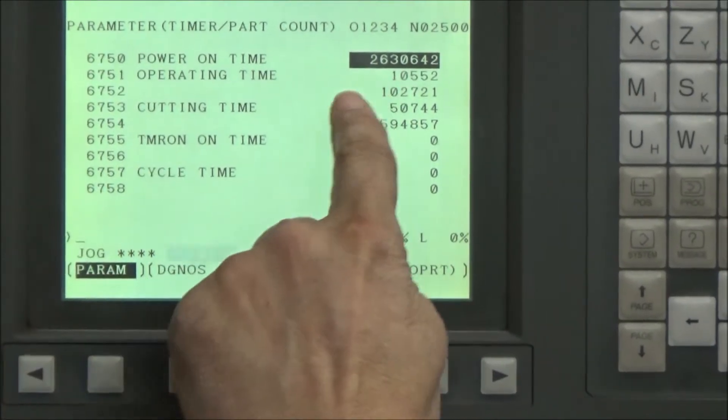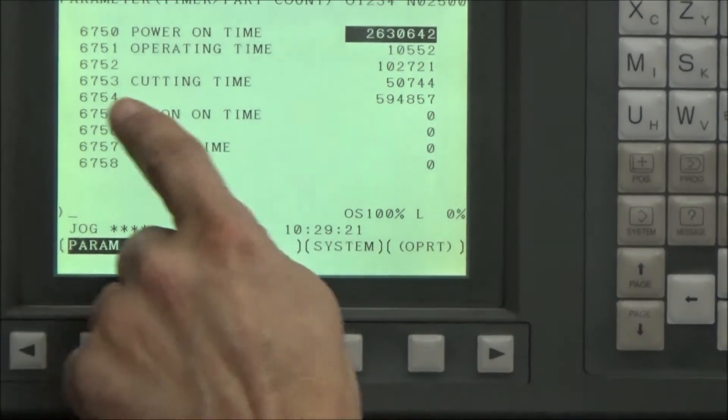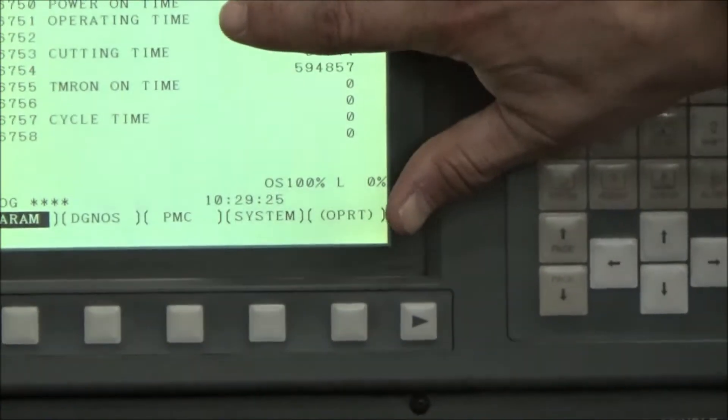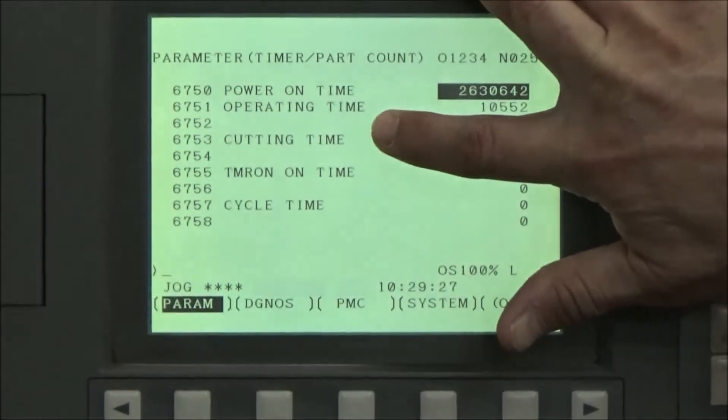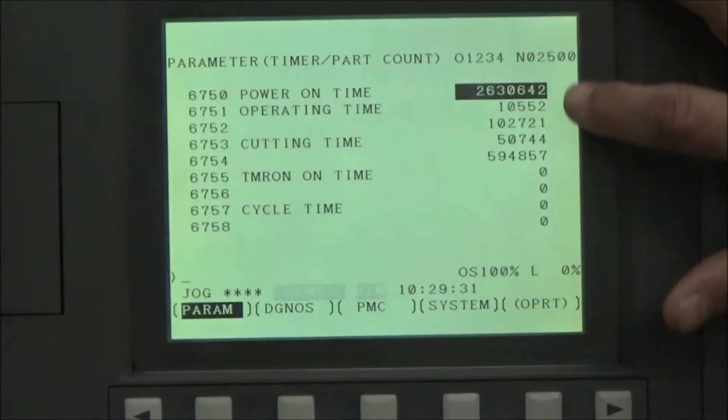That's where the power meter on time meter is. I'm there and I look and I see power on time, operating time, and then a blank, cutting time, and then a blank. And these all have numbers next to them.